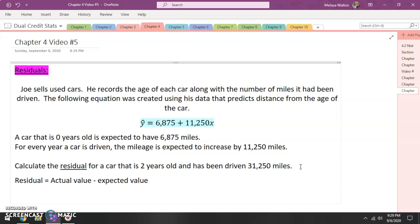All right, so this one, we already have one of these values ready to go. We already have the actual value of the car, the actual number of miles it has been driven. In this case, the actual amount of miles is 31,250 miles.